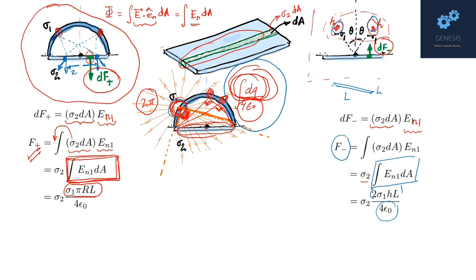So the total force will be the vector sum of these two. Here they are anti-parallel so it is just the subtraction of these two, and this gives you the answer sigma 1 sigma 2 L by 4 epsilon 0 into pi r minus 2 H. Notice that the result is independent of that angle theta.